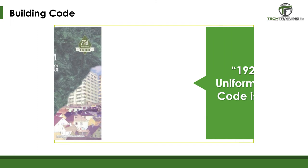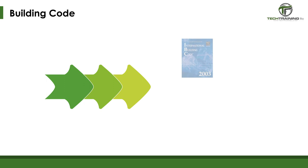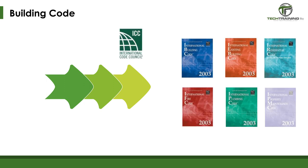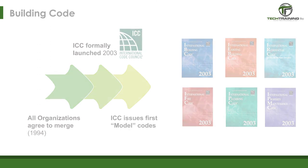In 1927, the Pacific Coast Building Officials Conference issued a model building code to compete with the National Building Code, known as the Uniform Building Code. Soon, other organizations began to issue national model building codes as well. These organizations — SBCCI, BOCA, and ICBO — agreed to merge in 1994 and become the ICC, or International Code Council. However, this organization became formally unified in 2003. ICC now produces a formal series of model codes.